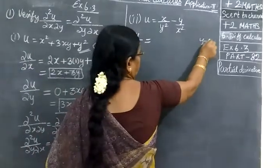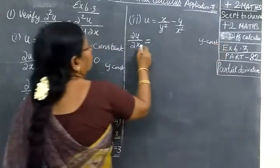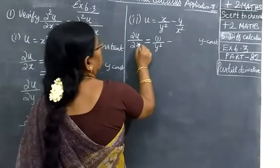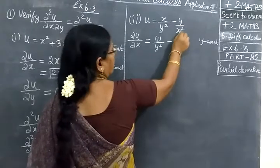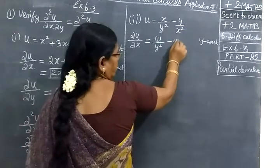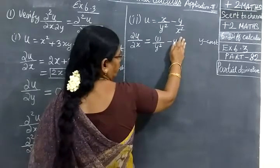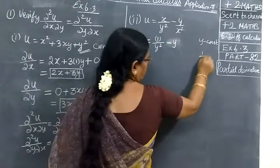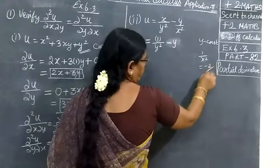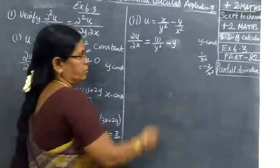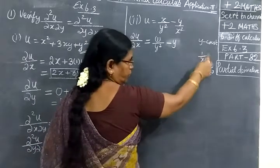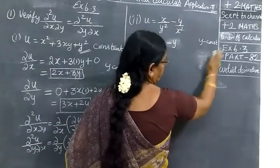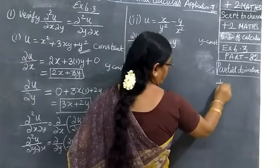We are partially differentiating u with respect to x, treating y as constant. We apply the power rule: x to the power gives x to the power minus 2, which is 1 by x square. The differentiation gives minus 2 by x², applying the rule x^n → n·x^(n-1).